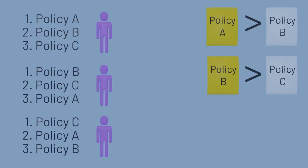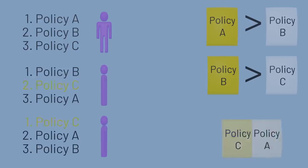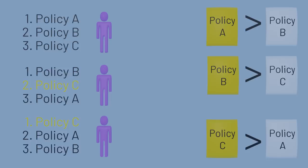We might think transitively that A should be preferred over C, but if there were a vote between policies A and C, policy C would actually win. So voter preferences in general don't follow the rules of transitivity.